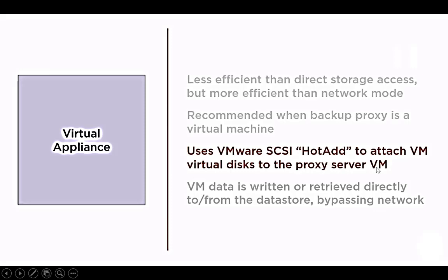The VM can transfer data within the datastore — the data does not travel over the network, bypassing the network connection. So it is much faster than network mode. VM data is written or retrieved directly to or from the datastore, bypassing the network.